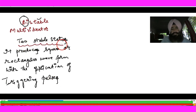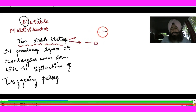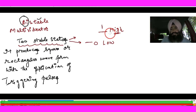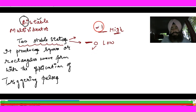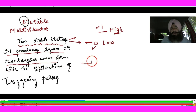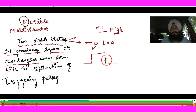It produces the square or rectangular wave with the help of triggering pulses. The two stable states are a low state and a high state — zero or one. With triggering pulses, it produces a square wave.